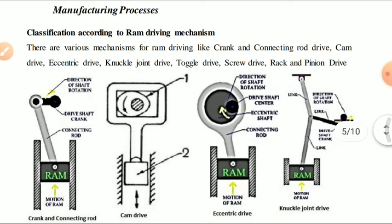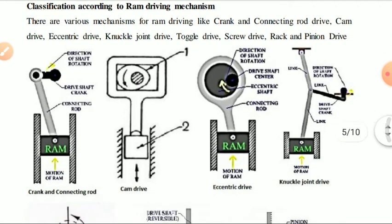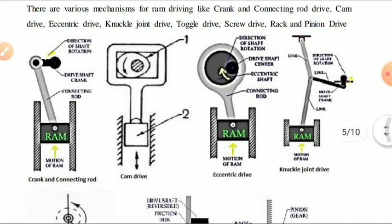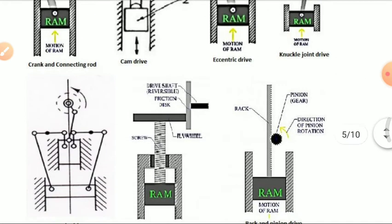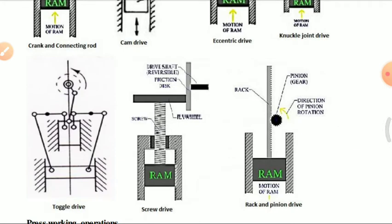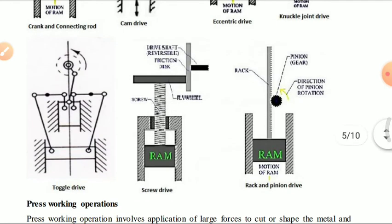Ram driving mechanisms include: first, connecting rod; second, cam follower; third, eccentric drive; fourth, knuckle joint drive. The cam mechanism converts rotary motion into linear motion. The fifth is a toggle mechanism, the sixth is a screw drive, and the seventh is a rack and pinion mechanism.